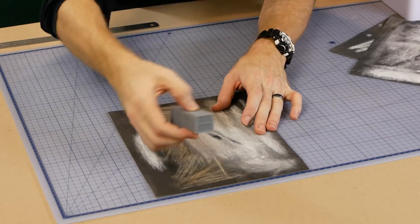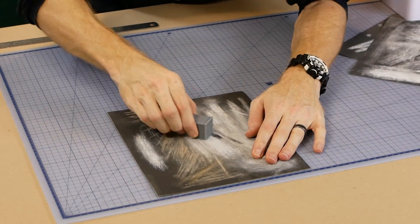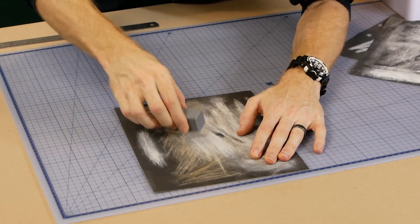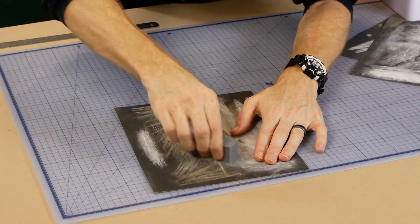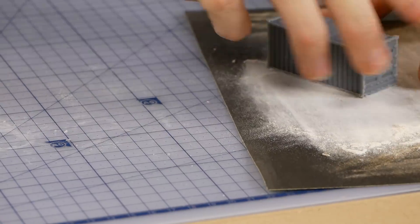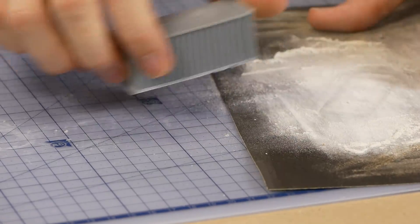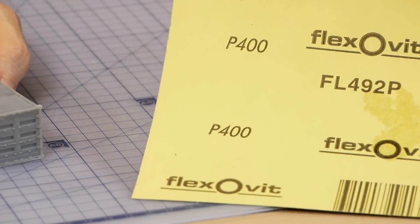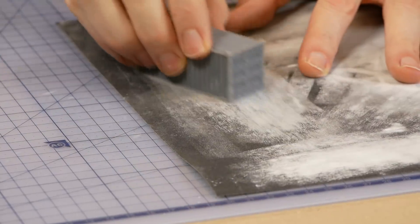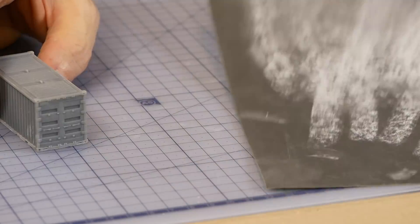As you can see this stuff sands exceptionally well. It's a breeze to sand back and takes very little effort. Even the technique of scraping away imperfections with a hobby knife works well with the resin and by using a few different steps of sanding starting with the 180 grit and then gradually stepping down to the 1200 grit we can get an ultra smooth finish.